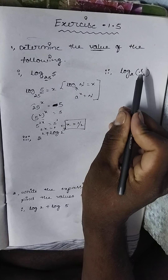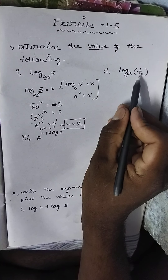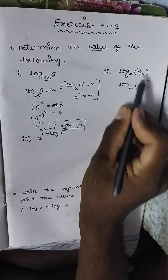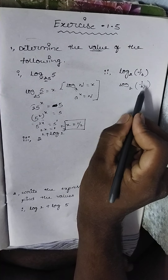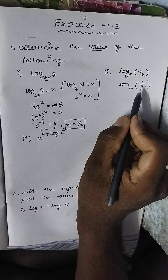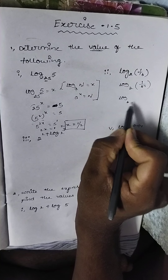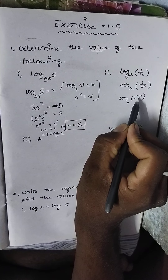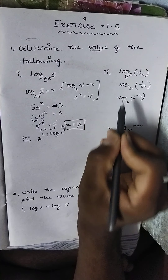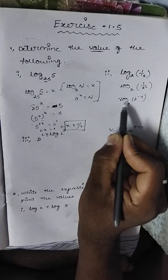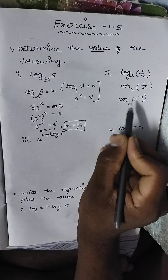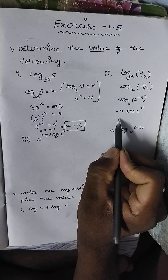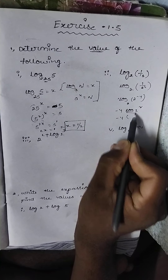Next question: log base 2 of (1/16). We can write 16 as 2^4, so this becomes log base 2 of (1/2^4). Using the formula 1/a^m = a^(−m), this is log base 2 of 2^(−4). Applying the formula log base a of a^n = n, we get −4 as the required answer.